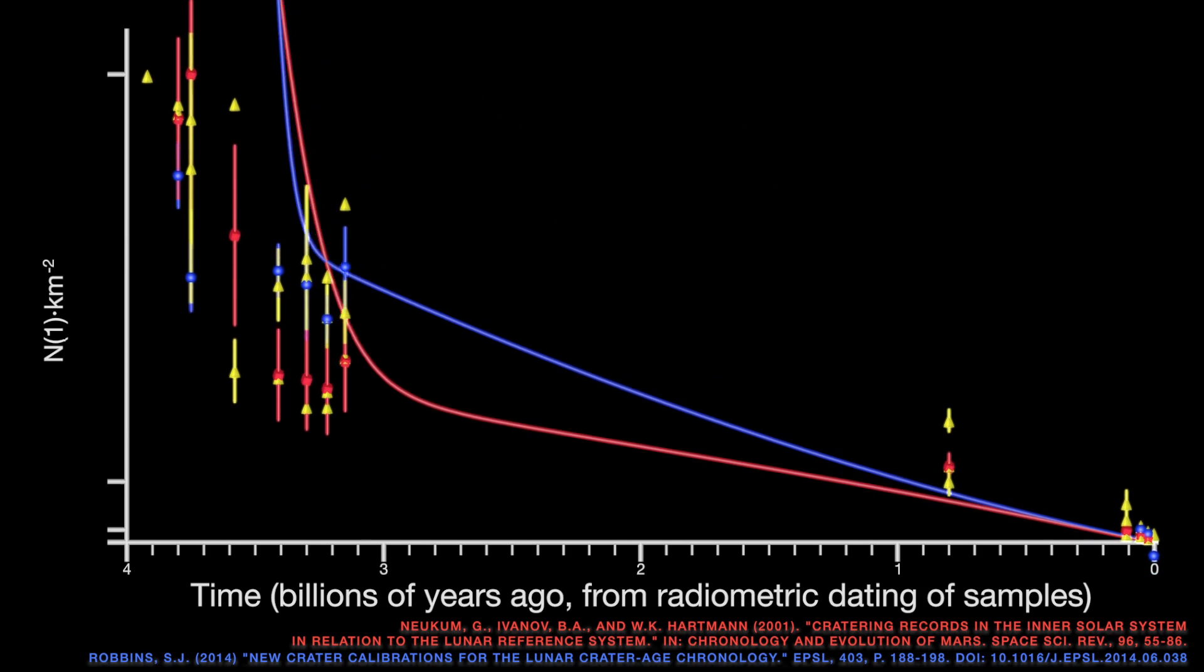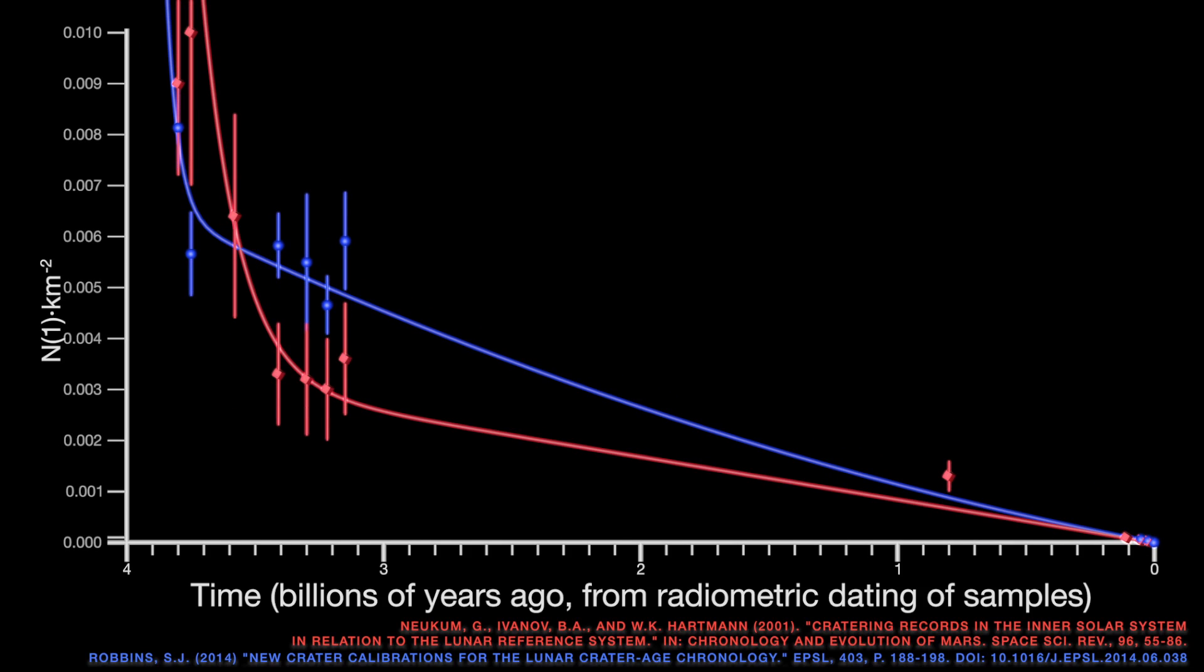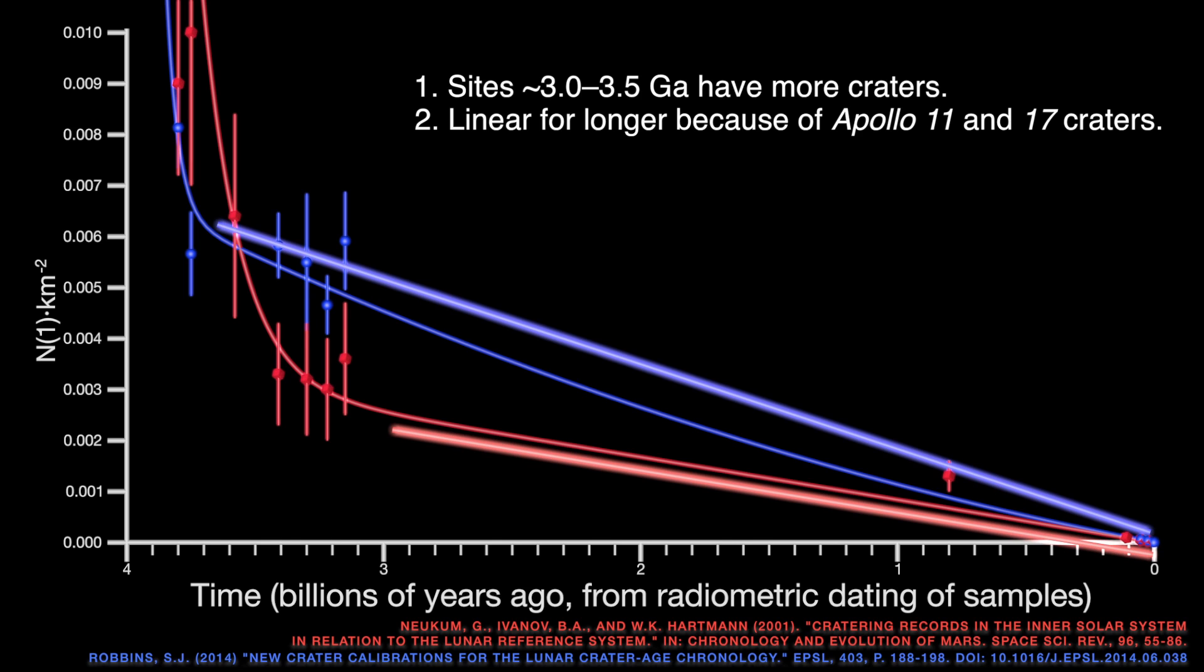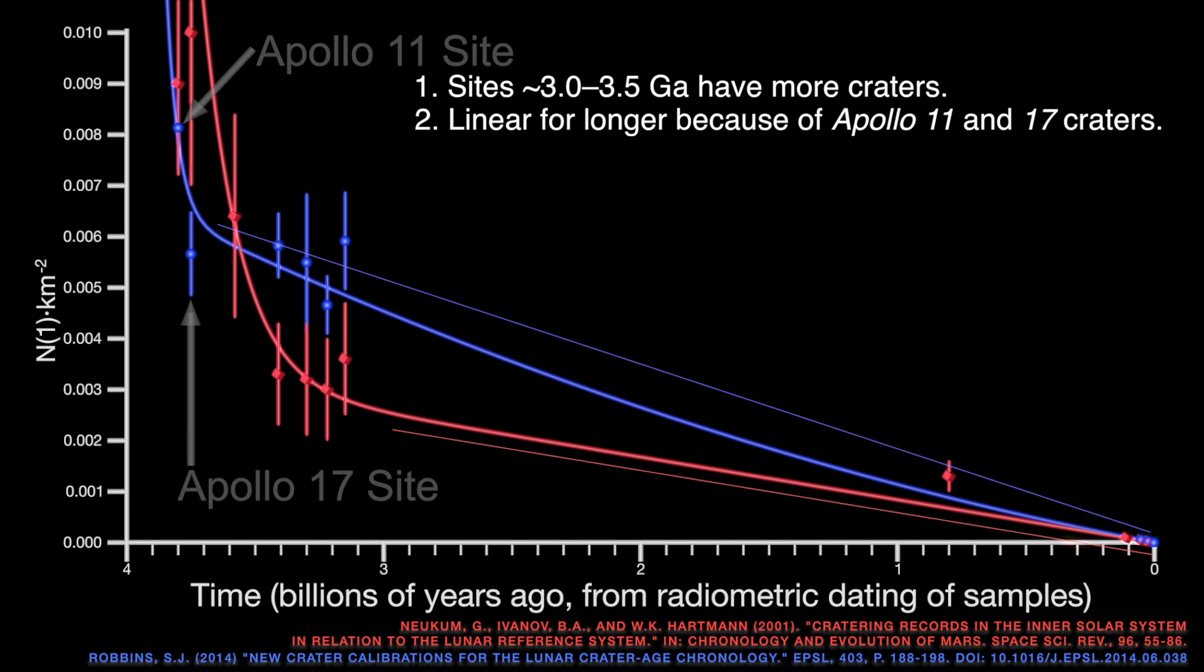After understanding why my results are different, we can look at how they are different from previous work. First, I found more craters at several landing sites than the classic work, meaning that my function is larger over much of the moon's history. Second, the new chronology is approximately linear for another 200 million years back in time. This is controlled primarily by the Apollo 11 and 17 landing site crater counts, where I found crater densities less than what other researchers have found.